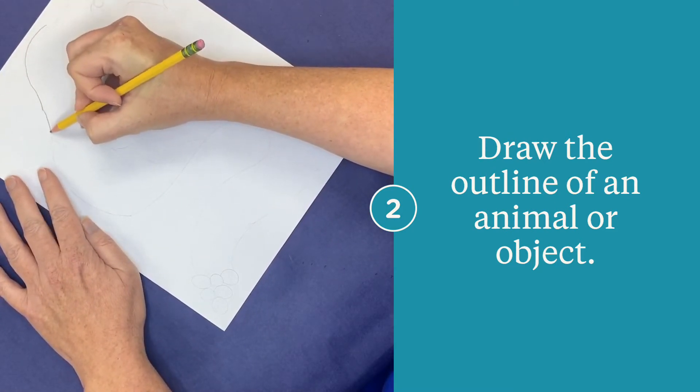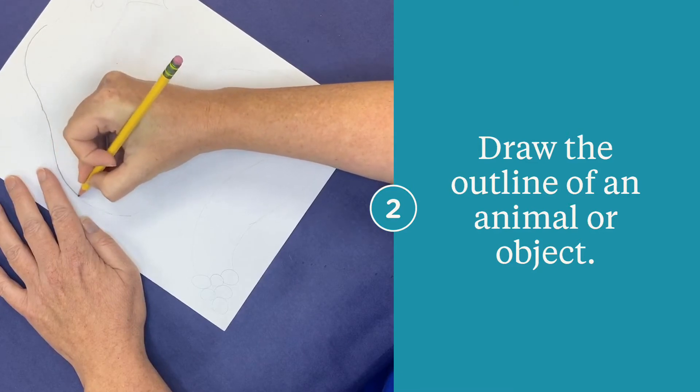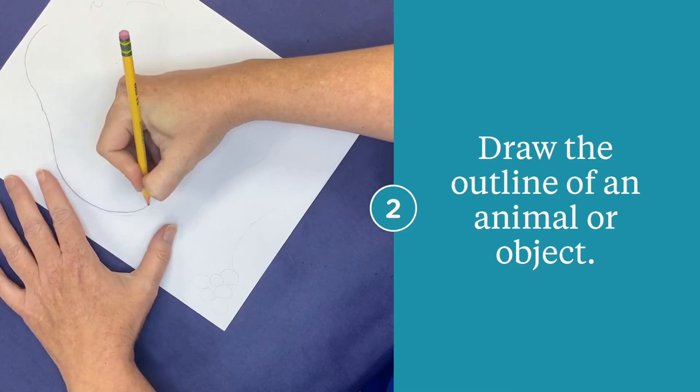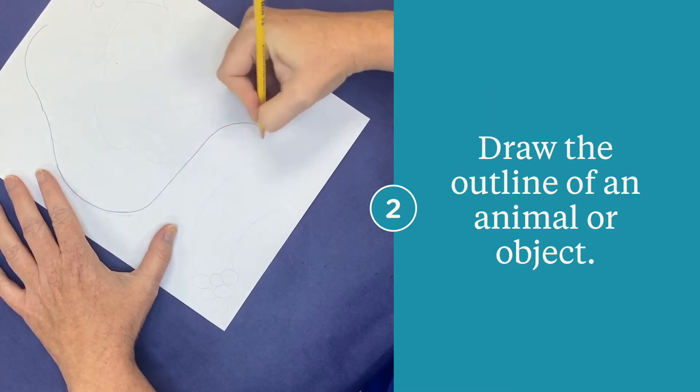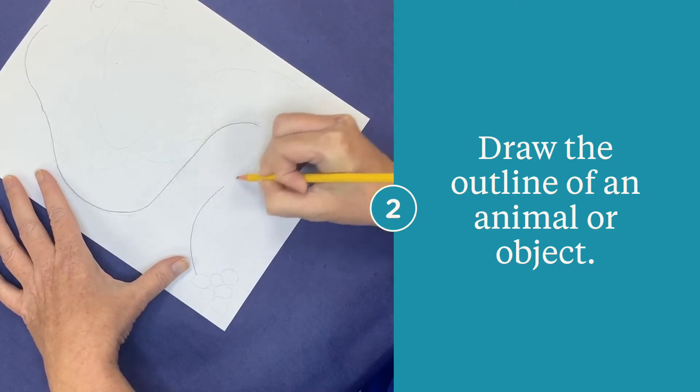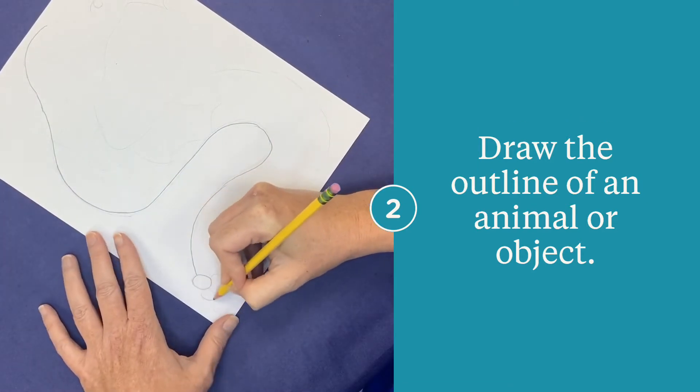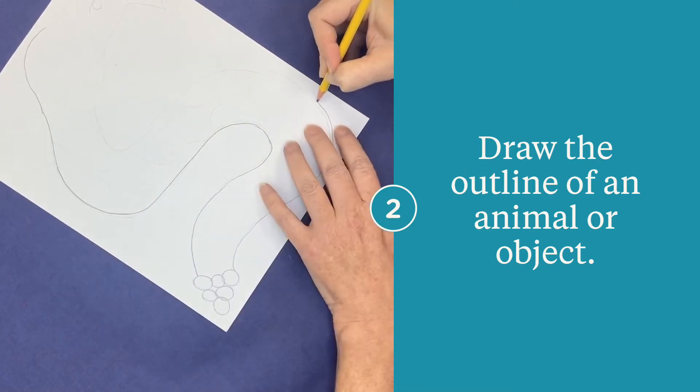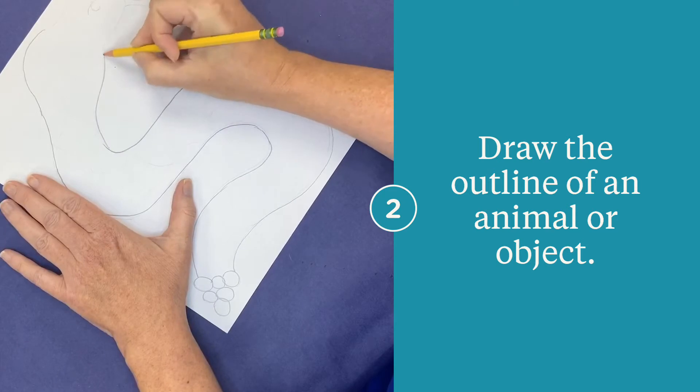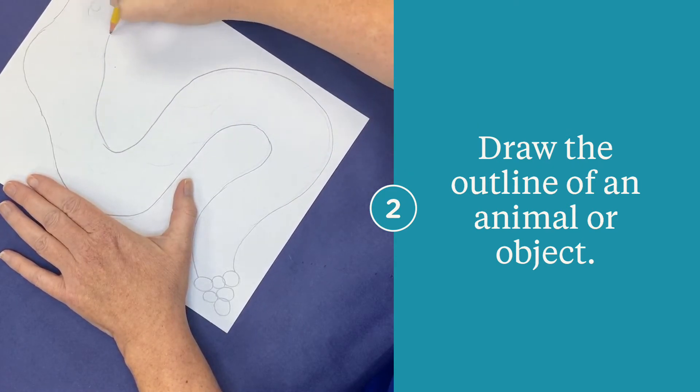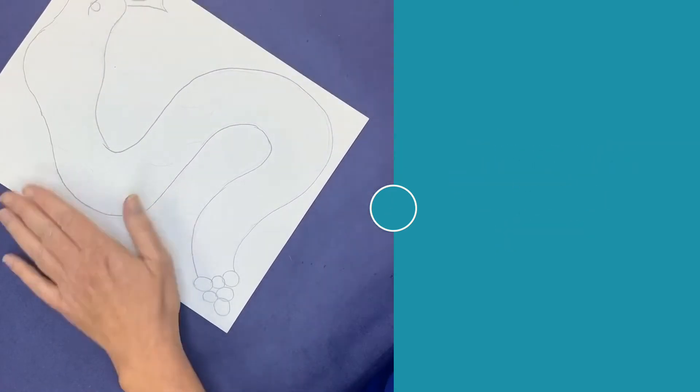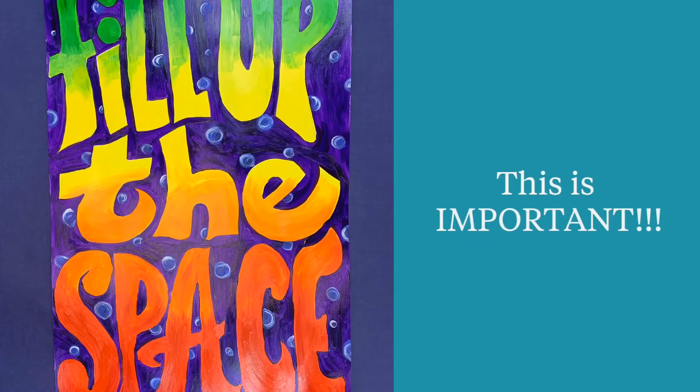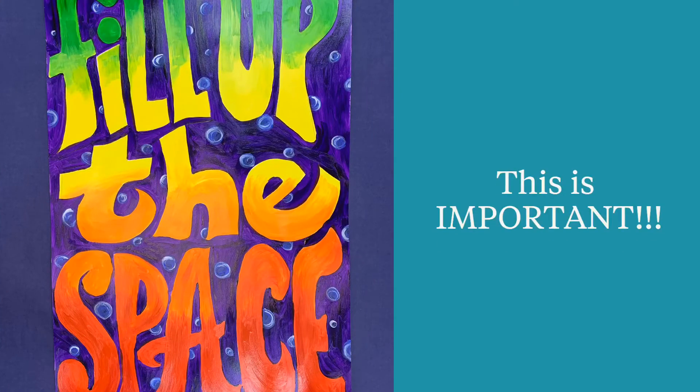Draw lightly at first until you have it the way you want it, and then make it a little bit darker. Remember, you can draw light until you get it right. Fill up the whole space of your paper.